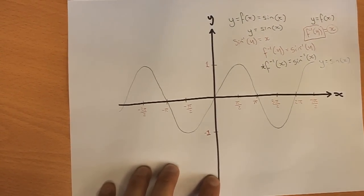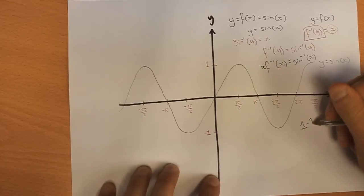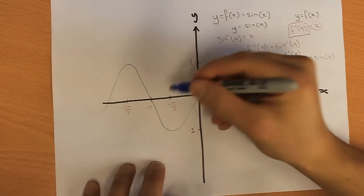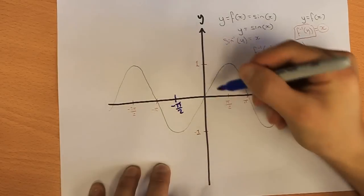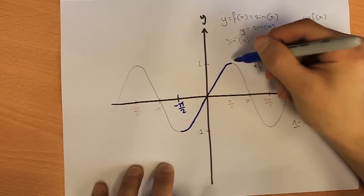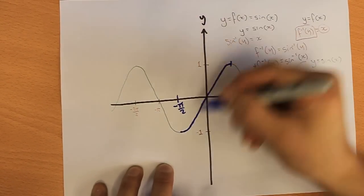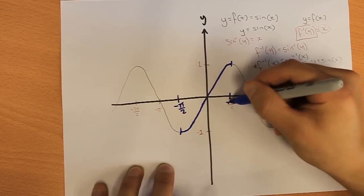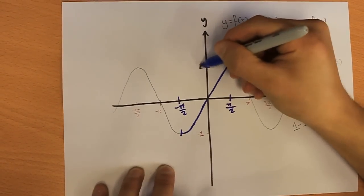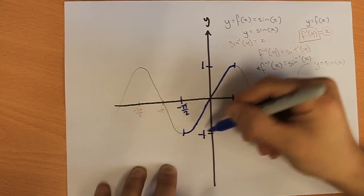Now you can only find inverses of functions if they are one-to-one functions. So what you need to do is restrict the domain into what we call the principal domain, so that sine x becomes a one-to-one function. The way we do that is we limit it to go only from minus pi over 2 to pi over 2, and obviously it goes up to 1 down to minus 1.